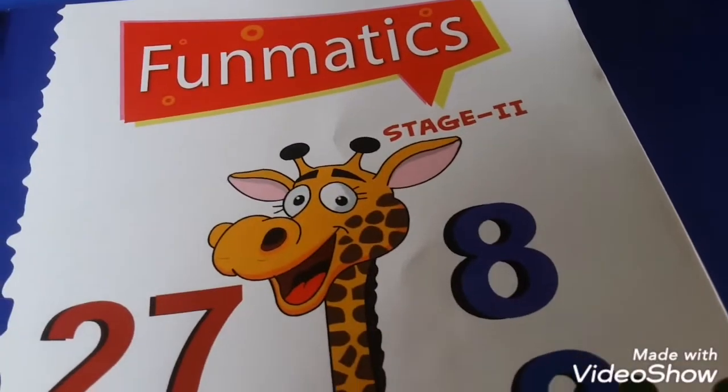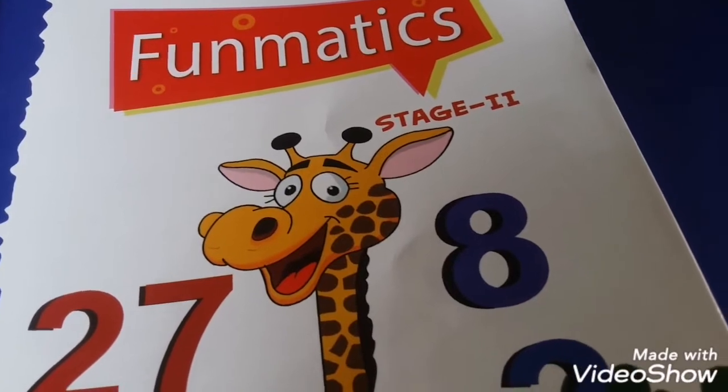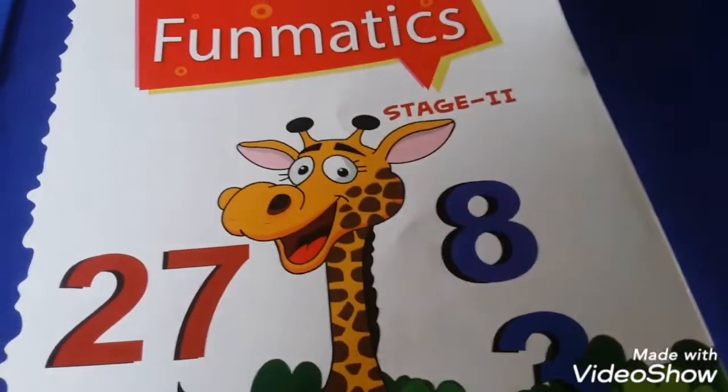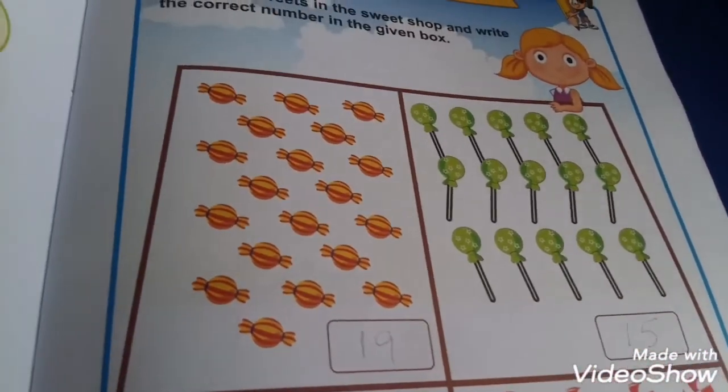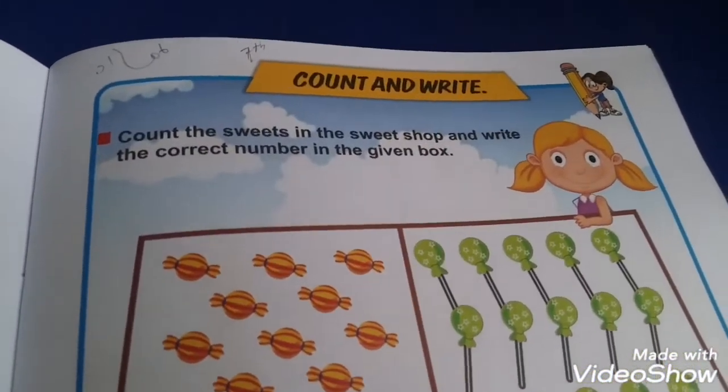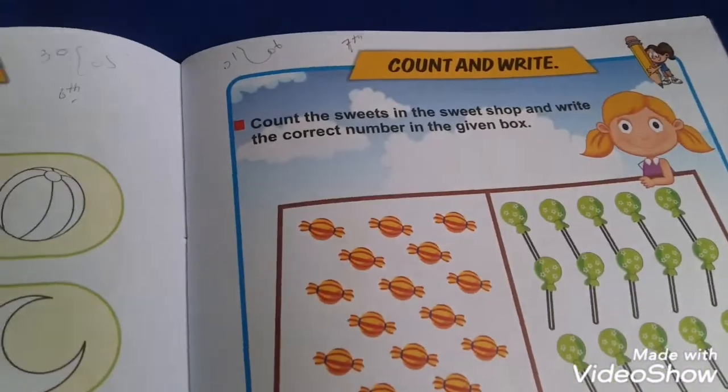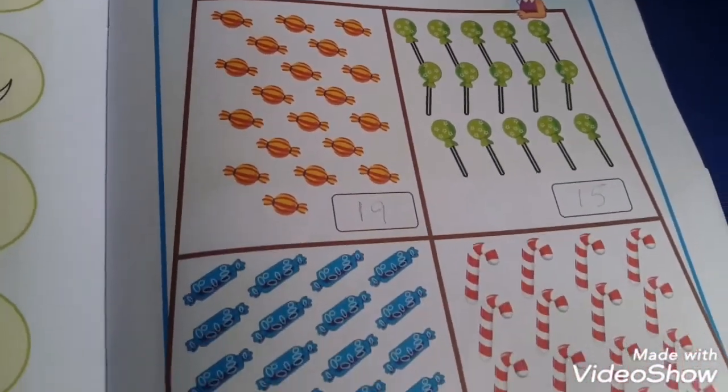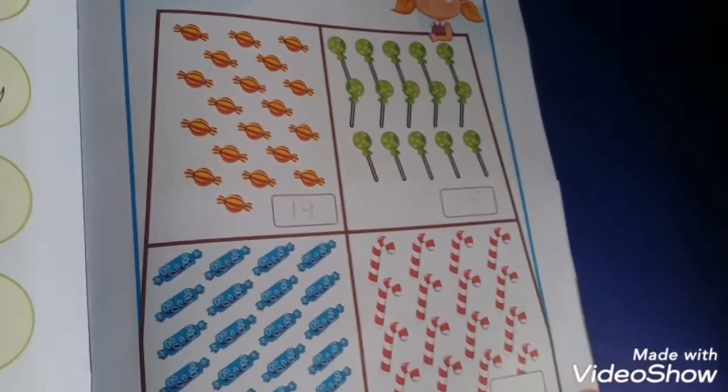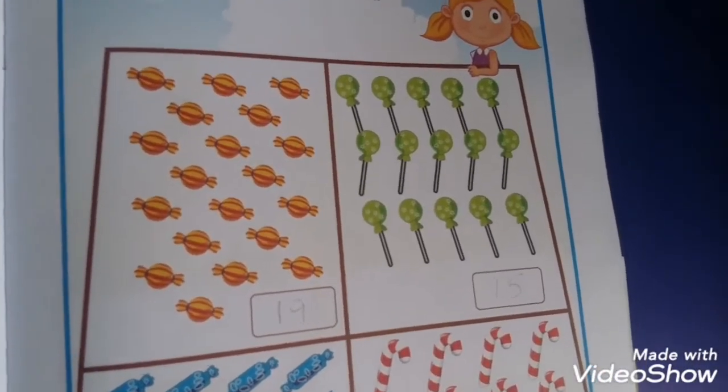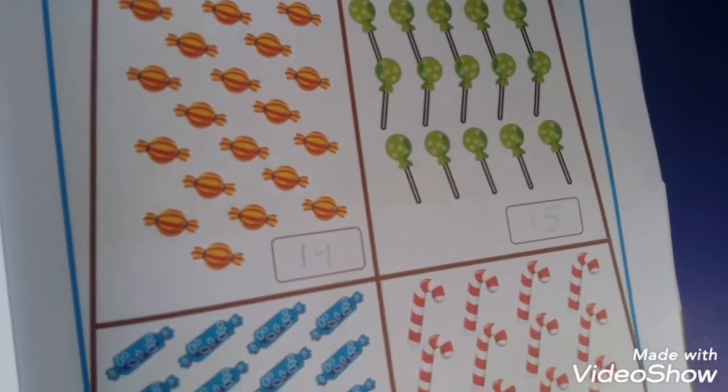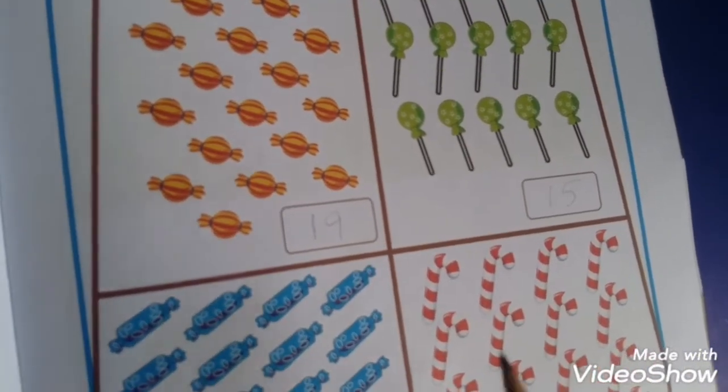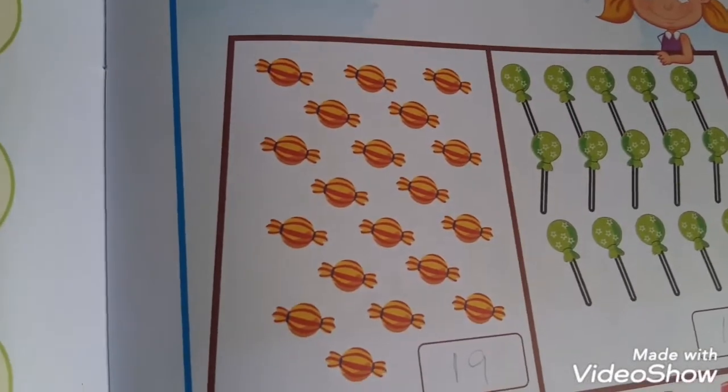Good morning students. This is mathematics for nursery class. Open to page number 15. Count and write - here are different types of sweets. Count the sweets in the sweet shop and write the correct number in the given box. You count the first one.